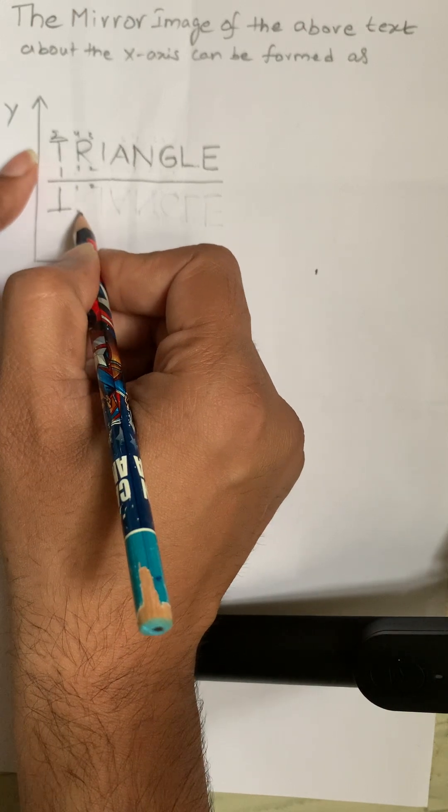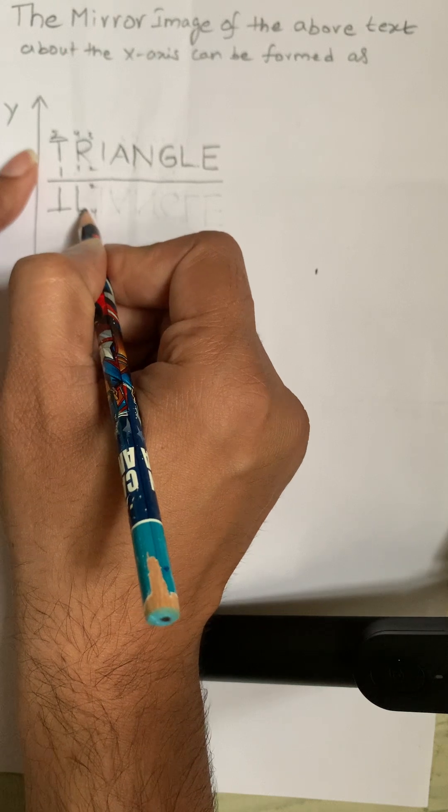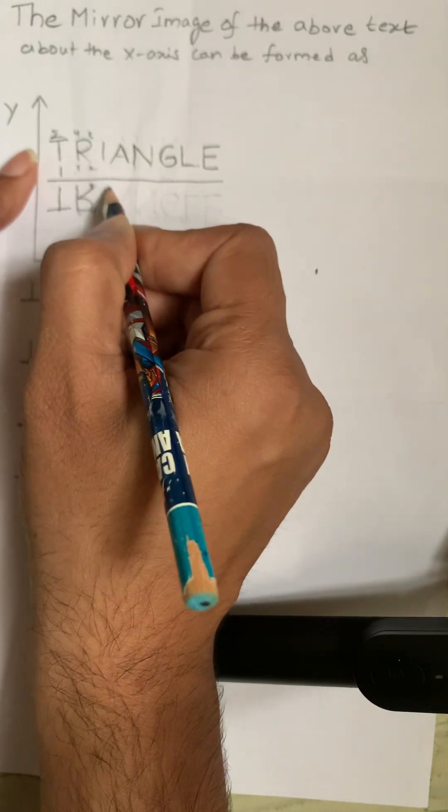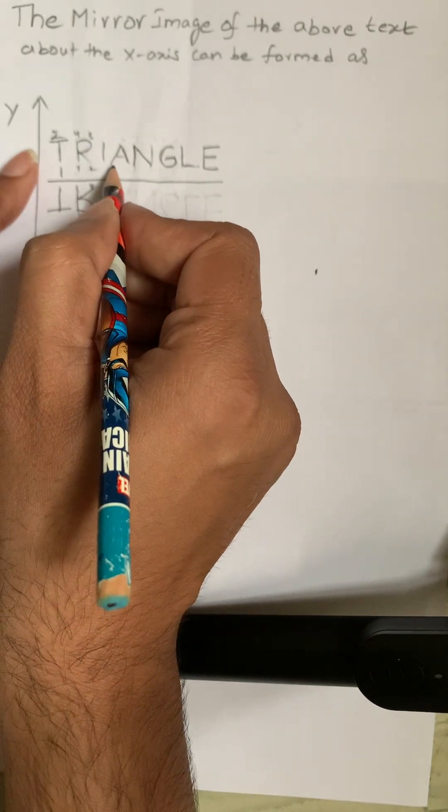So easily you can write this R like this, and we can easily know I will remain the same. Next, when it comes to A: 1, 2, 3.